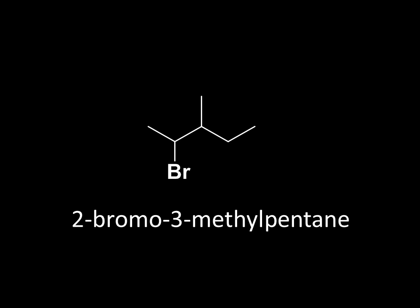This is 2-bromo-3-methyl pentane. But why do we call it that? The starting point is to identify the longest carbon chain. In this molecule, how many carbons are in that chain? There are five. And that is the basis of the 'pent' in the pentane component of this name. That's the root name of this molecule.